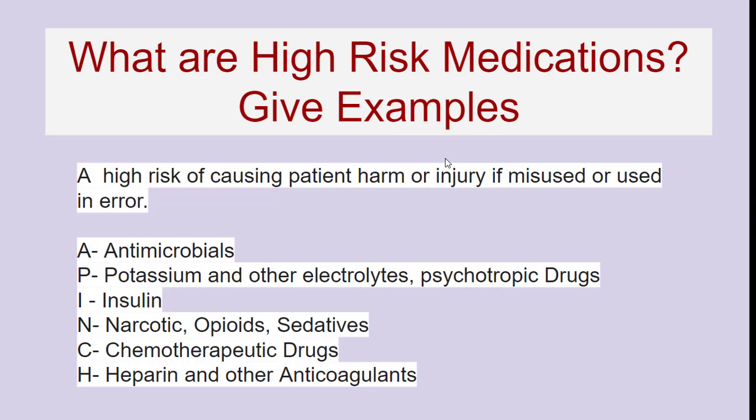What are high-risk medications? Give examples. High-risk medications carry a high risk of causing patient harm or injury if misused or used in error. The examples are remembered using the mnemonic PINCH: A for antimicrobials; P for potassium and other electrolytes and psychotropic drugs; I for insulin; N for narcotics, opioids, and sedatives; C for chemotherapeutic drugs; H for heparin and other anticoagulants.